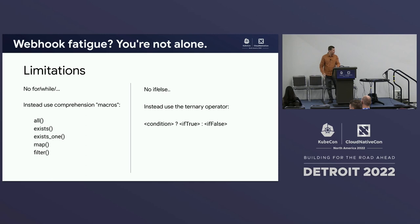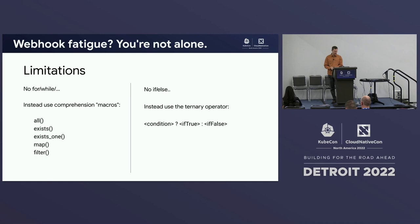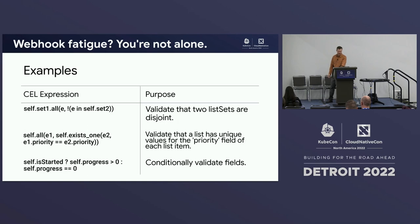Here are two of the major limitations you should know about CEL right away. First, because you can only write a single expression, you don't get any native for or while looping — instead, you're going to be using a comprehension form. Second, you don't have an explicit if-else, so instead we're going to be using the ternary operator. I wanted to show a couple of examples of this because it's one of the less obvious things about CEL.